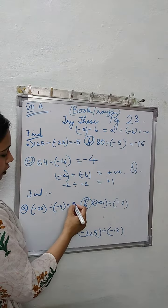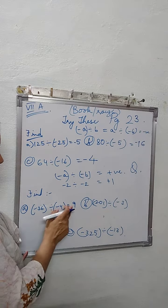36 divided by 4 equals 9. 4 nines gives you 36. Minus minus equals plus.